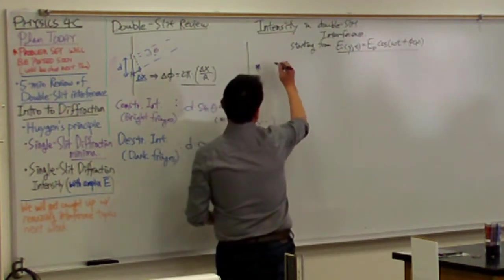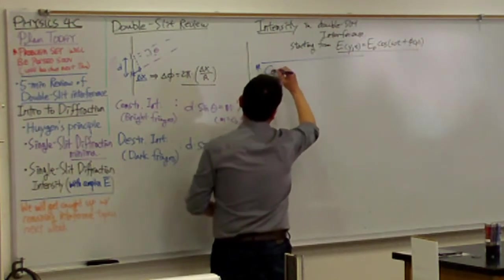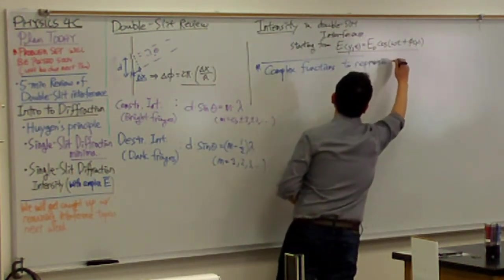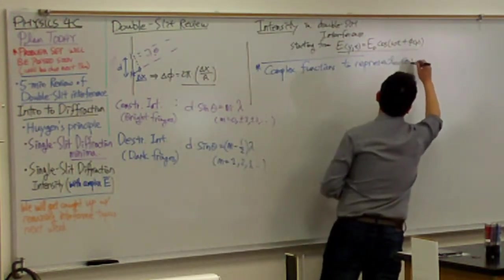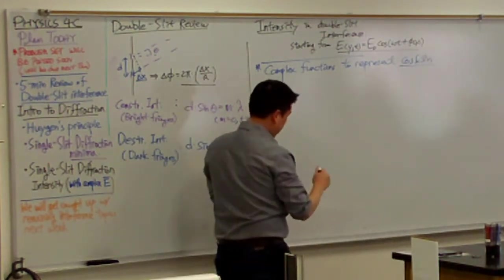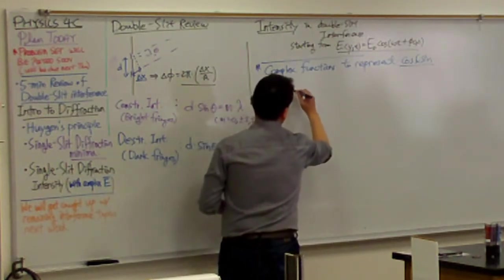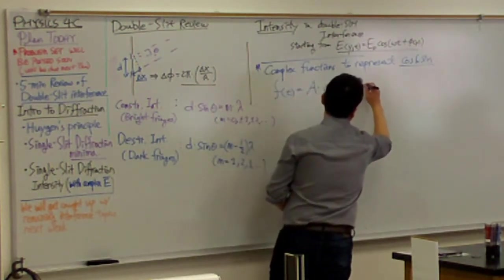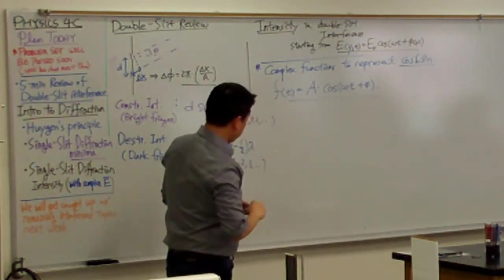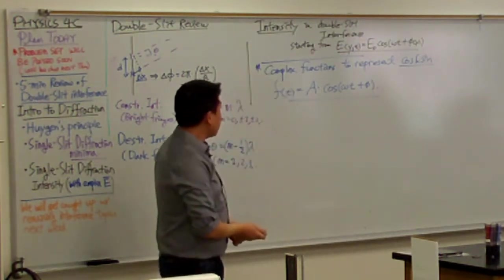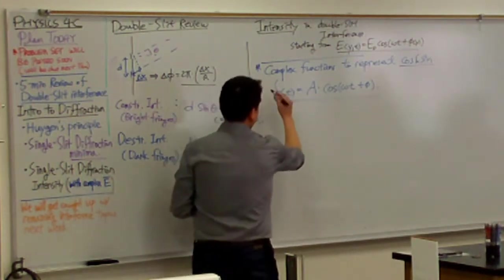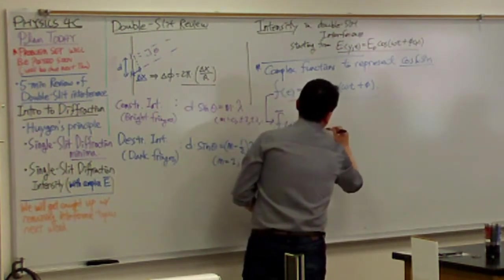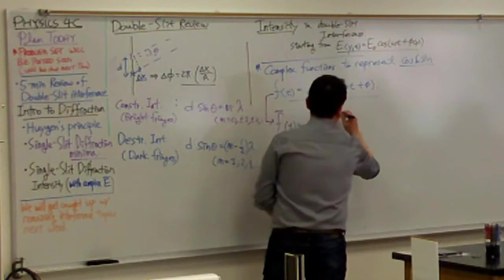As a reminder, the idea is to use complex functions to represent periodic oscillations. For example, if you have a function of time that looks like some amplitude times cosine of omega t plus phi, then what we are going to do — and what I did last time — is introduce a related complex function. That related complex function, marked with a squiggly line, looks like amplitude times the complex exponential e to the i(omega t plus phi).